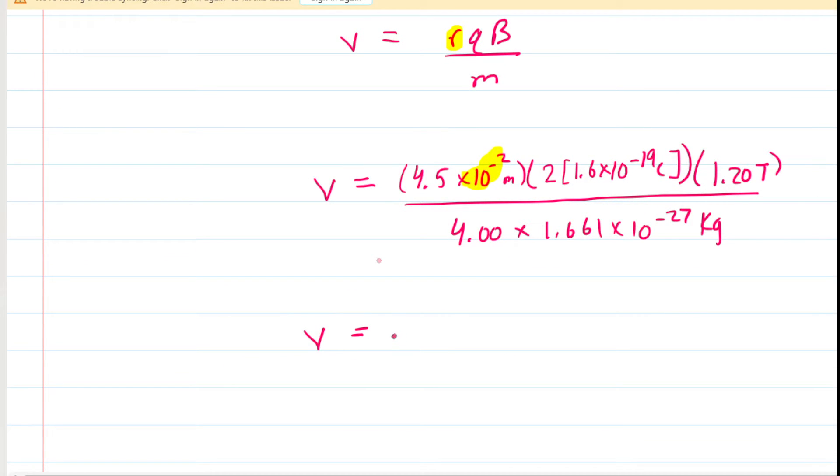So all of the conversions into standard units are in order here. And now when we calculate that, we're going to see that the speed is around 2.6 times 10 to the power of 6. That's going to be in meters per second, the standard unit of speed. That is the correct answer for part A.